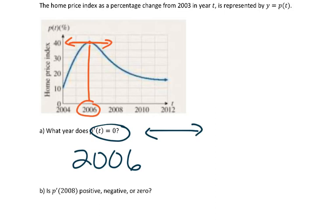So part B, is the derivative at 2008 positive, negative, or 0? So again, let's look at our tangent line. So I'm going to go to 2008, which is right here. So if I'm thinking about the tangent line there, it's sloping down like this.